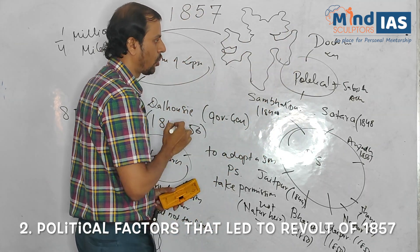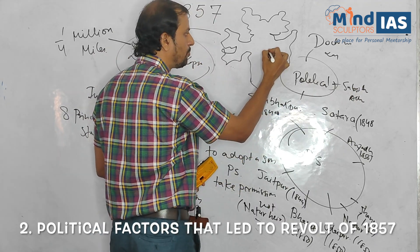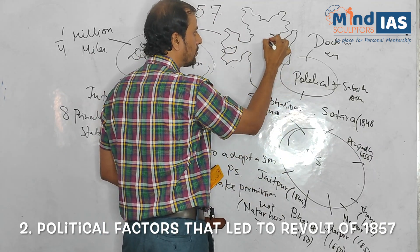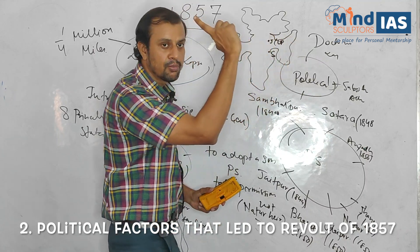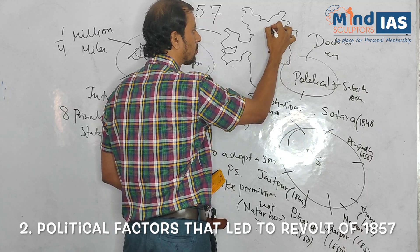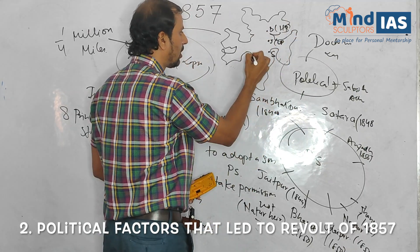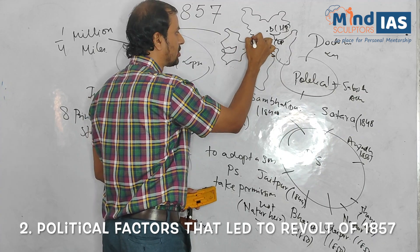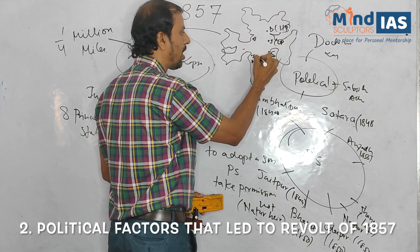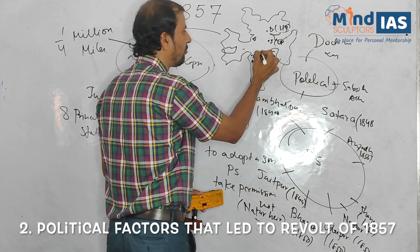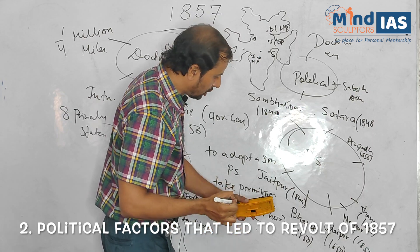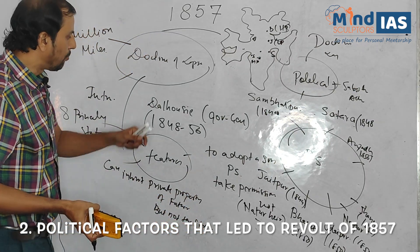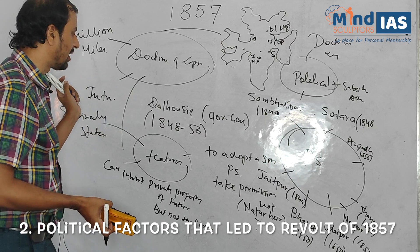These eight annexed states can be located on the Indian map and are very important for history, particularly for the history optional. Sambalpur is in Odisha near the Chhattisgarh border, Jatpur is near Bundelkhand in UP, Bhagat is in Himachal Pradesh, Satara is in Maharashtra, Udaipur is in Rajasthan, Nagpur is in Maharashtra, and Jhansi is in the Bundelkhand region of UP.